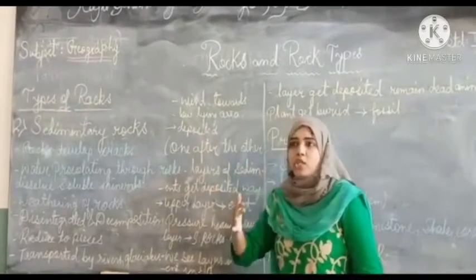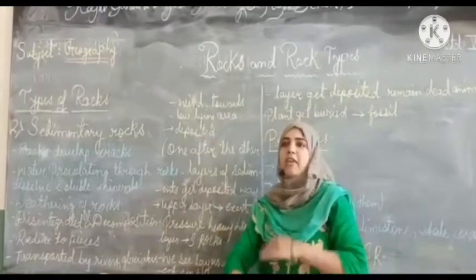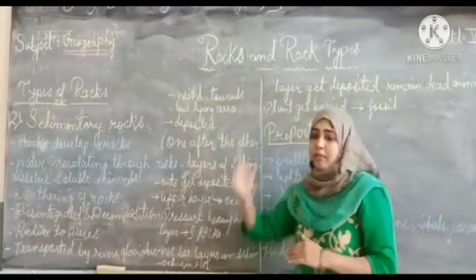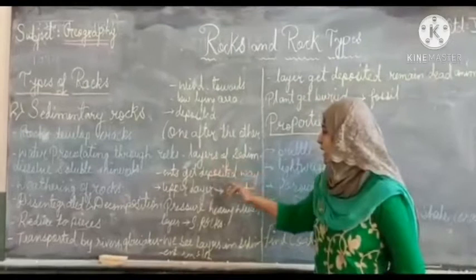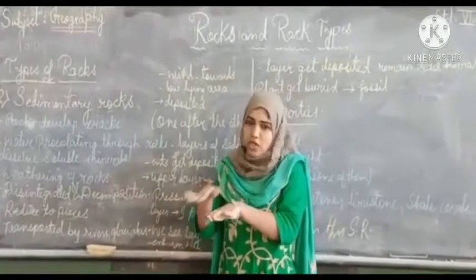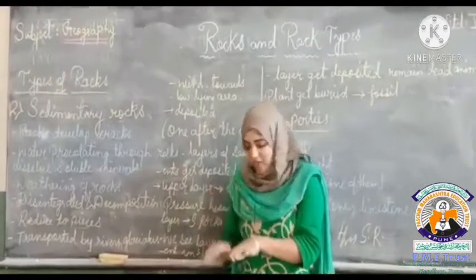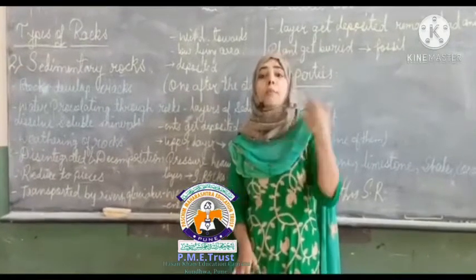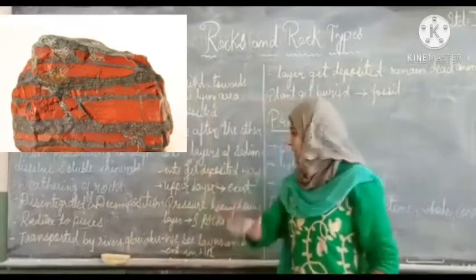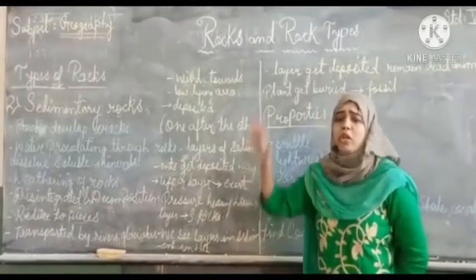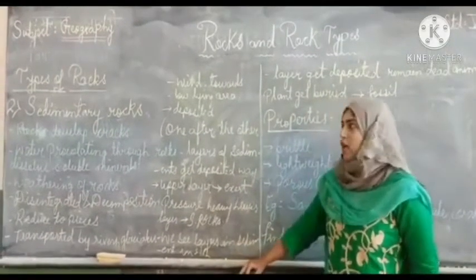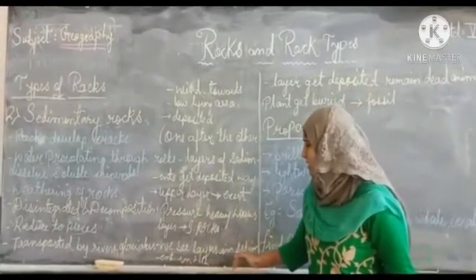They are deposited one after another in layers — first layer, second layer, third layer, fourth layer, fifth layer — they get sedimented. That is why they are known as sedimentary rocks. They are present in layer form, and these layers get deposited from very old and previous times — millions and billions of years old.